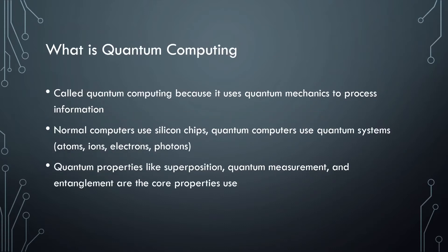So what is quantum computing? Well, it is called quantum computing because it relies on quantum mechanics to process information. Normal computers use silicon-based chips, while quantum computers use quantum systems like ions, atoms, electrons, and photons.